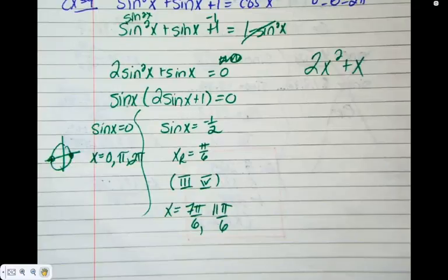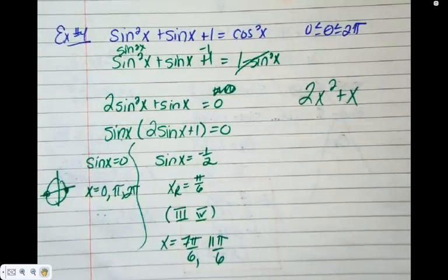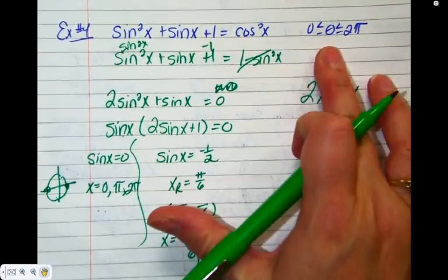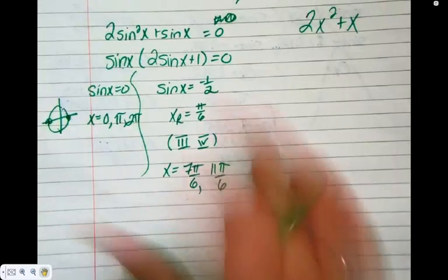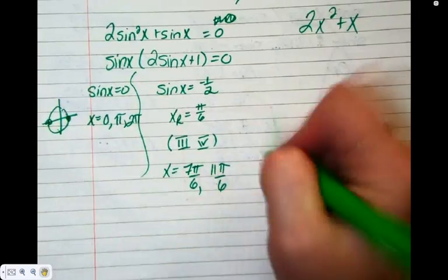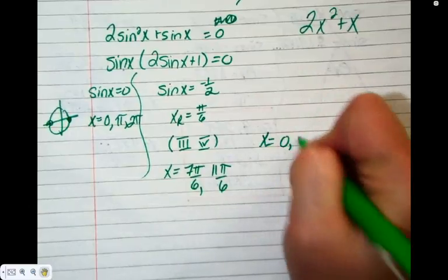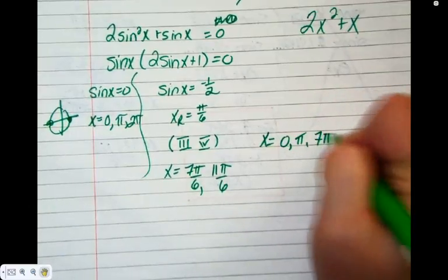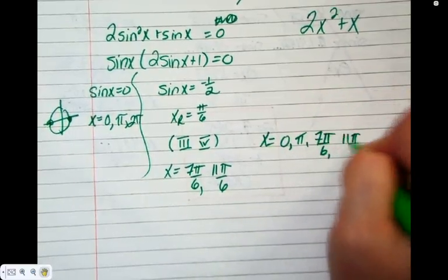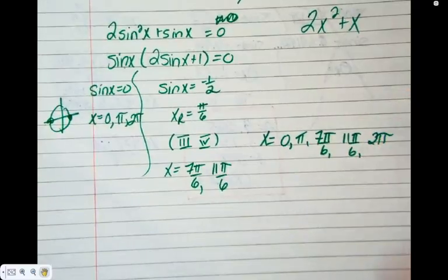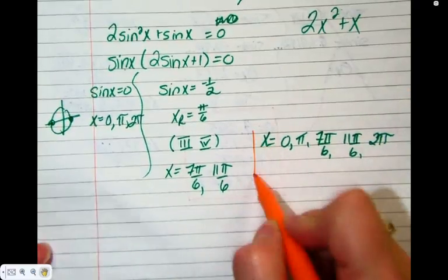Check the interval. No interval. That's very good. Are these all good values? Just string them together, put them in order. So 0, pi, 7 pi on 6, 11 pi on 6, 2 pi. This would be a 4 mark exam question.